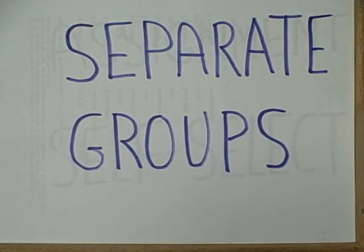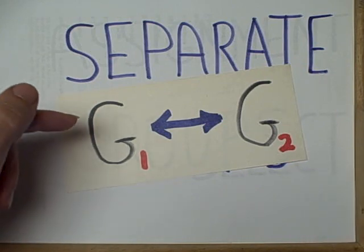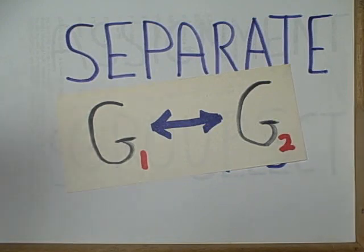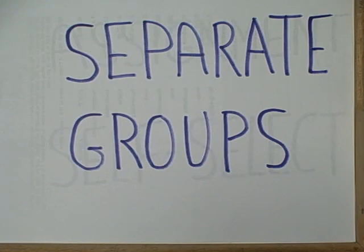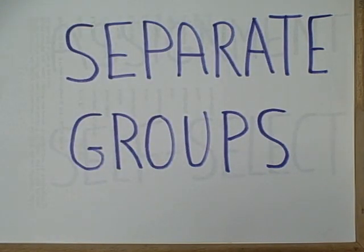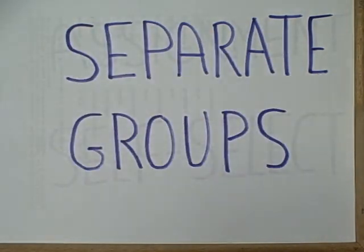Another design is that of separate groups. Here we take our entire sample and divide them into two different groups. One might be experimental and the other the control group, or we could look at naturally occurring groups like male, female, young, or old. Like all research designs, there are problems in the separate groups design, usually involving confounding variables.